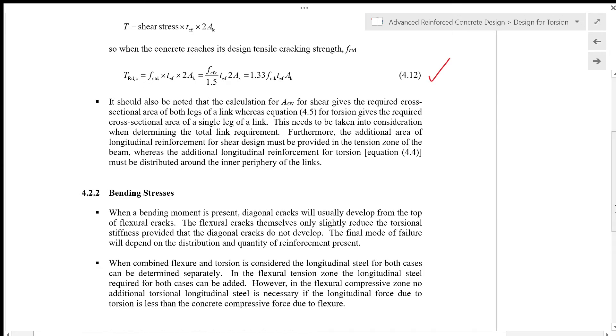In most cases our structural member is subjected to bending. When a bending moment is present, diagonal cracks will usually develop from the top of flexural cracks. The flexural cracks themselves only slightly reduce the torsional stiffness provided that the diagonal cracks do not develop.